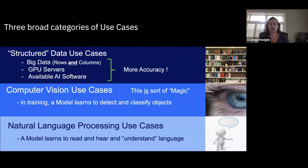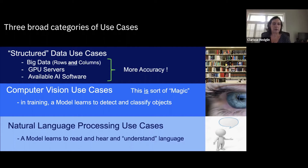In terms of structured versus unstructured data, with structured data you have traditional analytics with lots of rows and columns, and a lot of feature engineering where you're determining rules-based views of your data or looking at very specific columns and labels. You get a lot of accuracy as you develop better feature engineering, and you get better and faster results as you can use GPU servers to accelerate your compute.